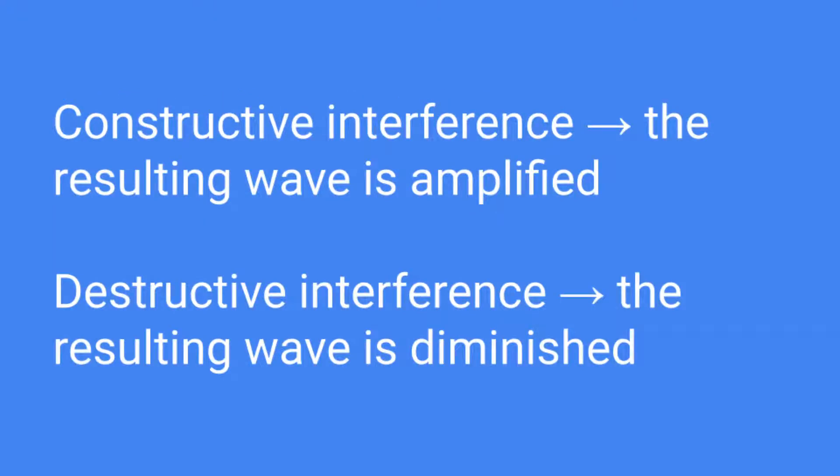There are two main types of interference. The first is constructive interference, where the resulting wave is amplified. The second type of interference is destructive interference, and in this case, the resulting wave is diminished. How we use interference in quantum computers is that we use constructive interference to amplify the results that we want, and we use destructive interference to diminish the results that we do not want, in order to get back the correct result with around 99.9999% chance of correctness.